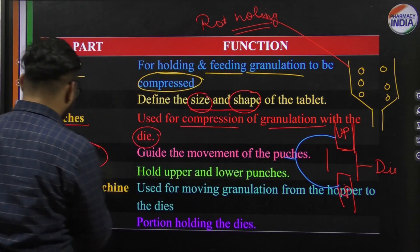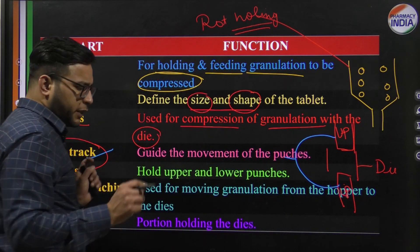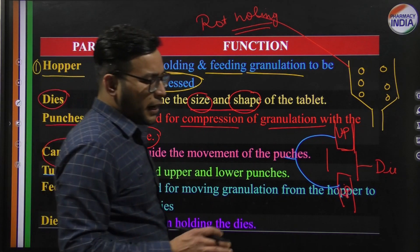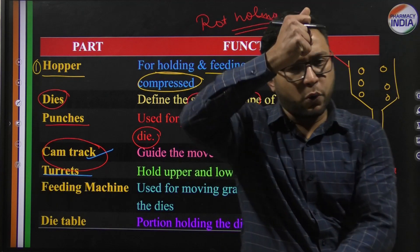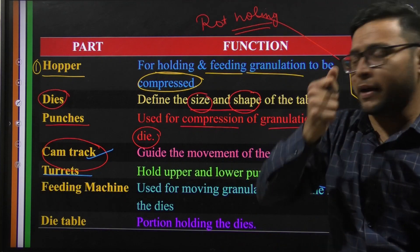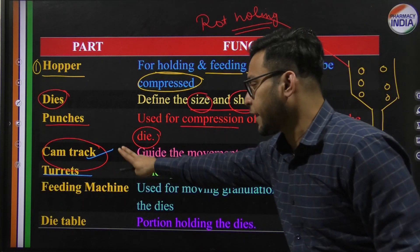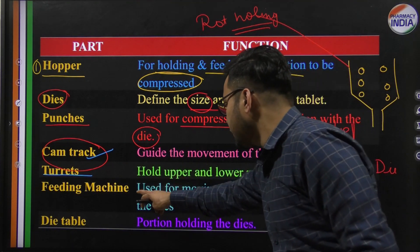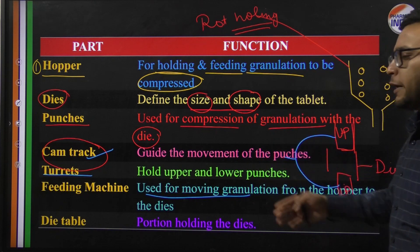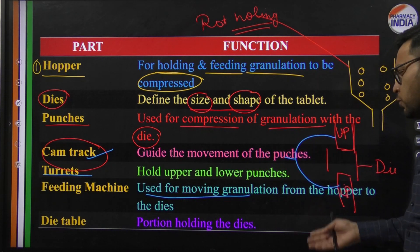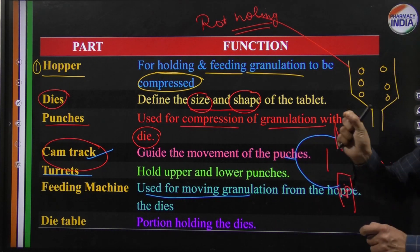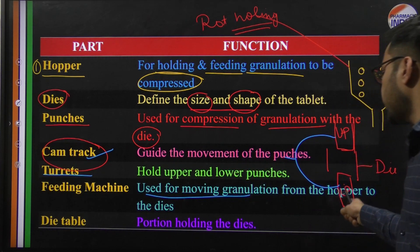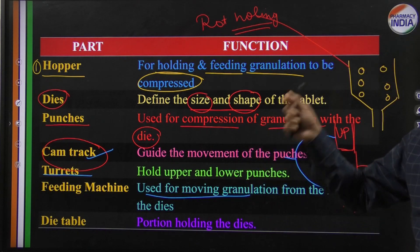Next is the turret. The turret holds both the upper punch and lower punch, and they are guided by different cam tracks. The turret also holds the feeding machine, sometimes called 'joki,' which mainly helps granules move properly from the hopper to the die.